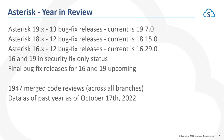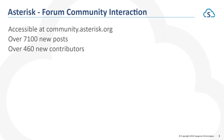Over the past year, we've had 1,947 merged code reviews across all the different branches of Asterisk. Moving on to the community forum — for those who may not be familiar, we have forums at community.asterisk.org. Our mailing list has transitioned over there, so that's where the bulk of our community interaction happens. If you're running into an issue or a problem, it's a great resource to receive help. Over the past year, we've had over 7,100 new posts and over 460 new contributors.